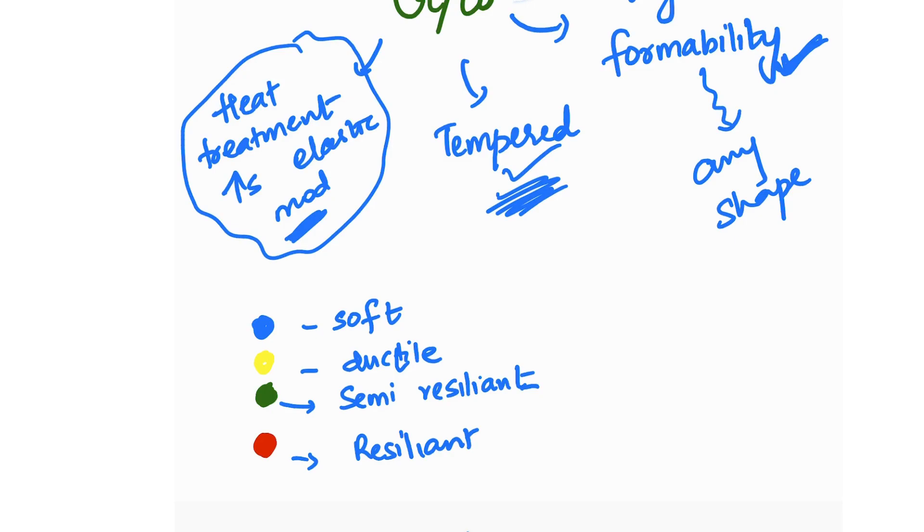It can also be tempered, and this is available in different color codes: blue for the softest, yellow for ductile, green for semi-resilient, and red for resilient. These are the things you should know about chromium cobalt or Elgiloy.